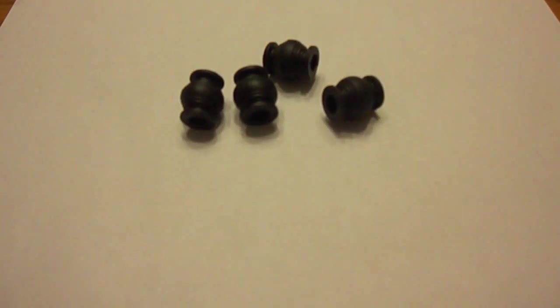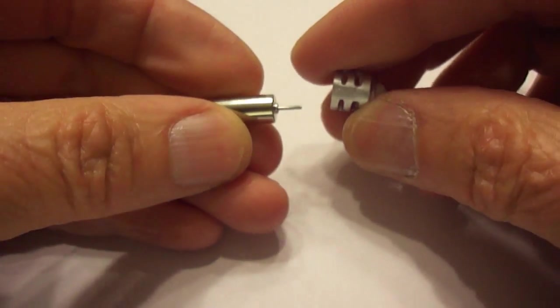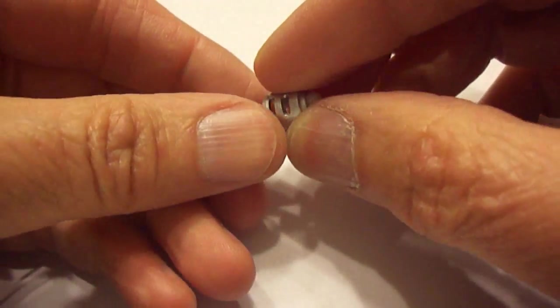This frame is about 0.45 grams. These four little rubber feet are about 2.4 grams, so almost 2 grams heavier than the little frame.